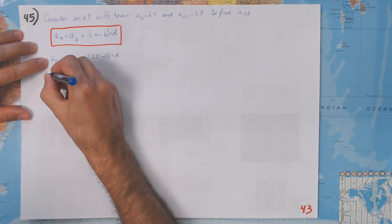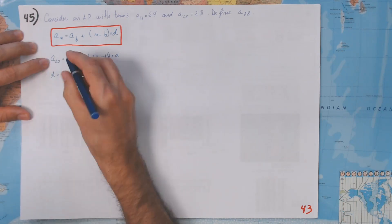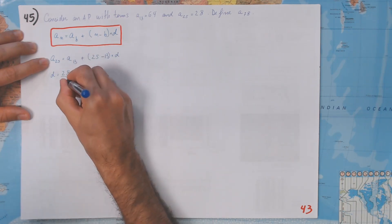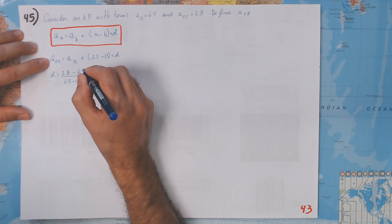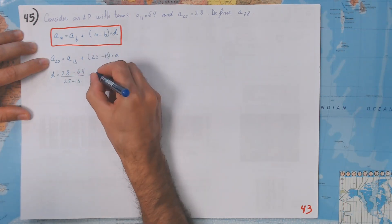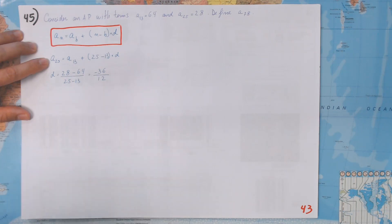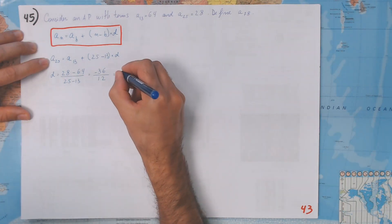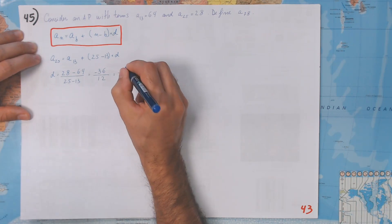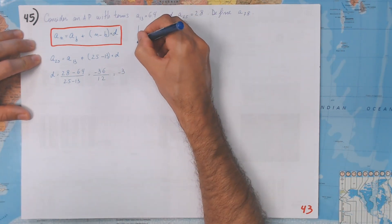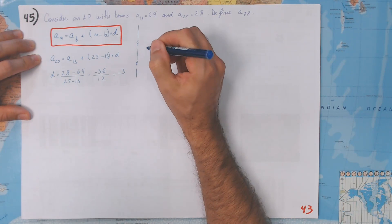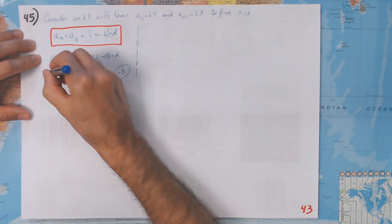Divided by 25 minus 13, and that is going to be minus 36 divided by 12. Yes, 4 with 26, 36. And this is going to be minus 3. That means that our D is minus 3. Wonderful, that is going to be our D.